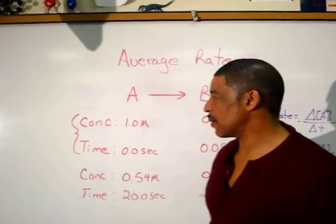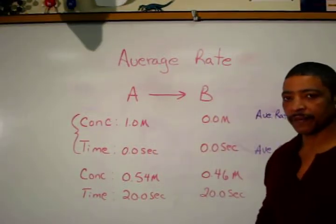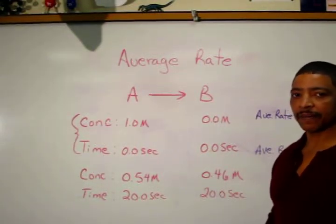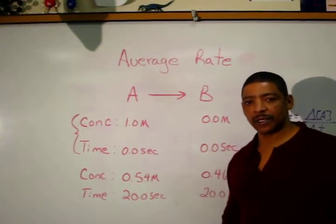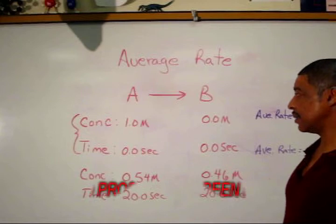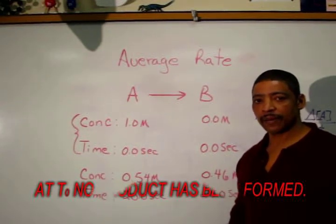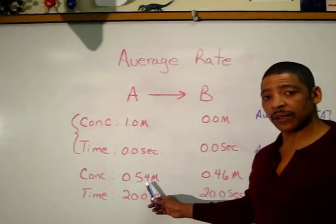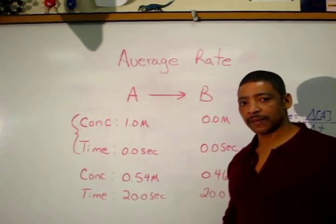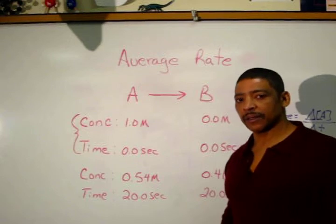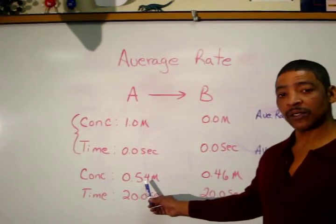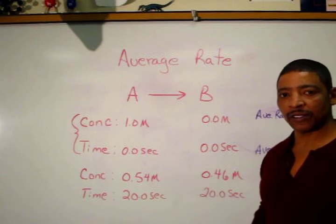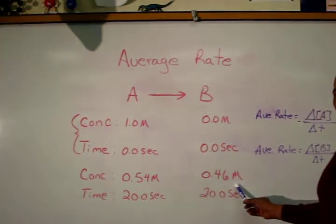Consider the following example where reactant A forms product B. At T₀, or at the beginning of the reaction, the concentration of A is 1 molar and the concentration of B will be 0 molar. After 20 seconds elapses, the concentration of A is now 0.54 molar. During this same time period, as A was consumed or disappeared, B was being formed. The amount of A that was consumed represents the amount of B that was being formed.